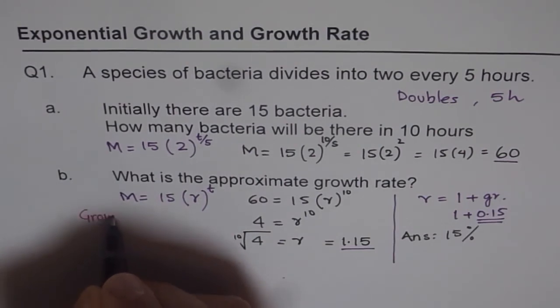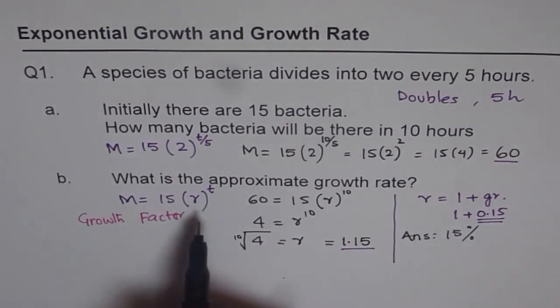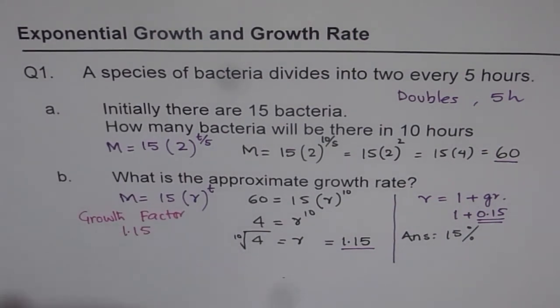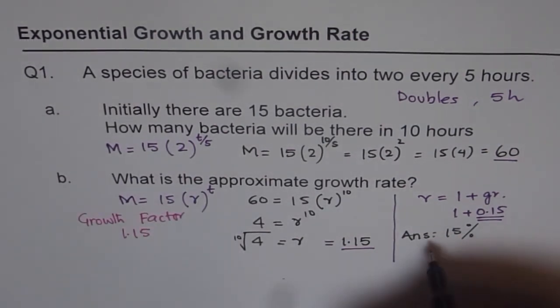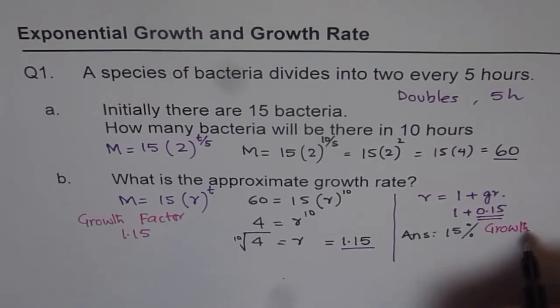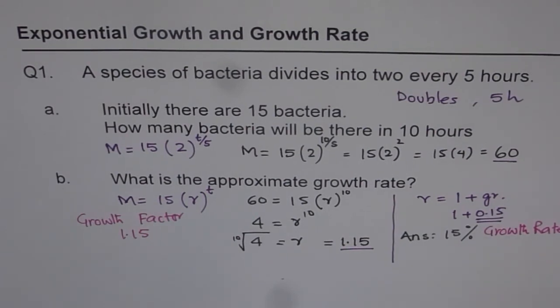Let me just remind you with this so that there is no confusion. Growth factor - by what it gets multiplied in all, 15 times what. So growth factor is 1.15. But growth rate is 15%. 15% more than 1 is 1.15. That is how you need to understand it. I hope that's absolutely clear and that helps. Thank you.